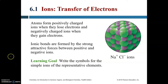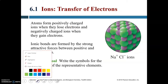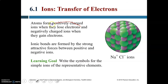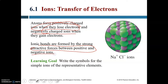We will be talking about chemical bonds, starting with the concept of ions. Atoms are electrically neutral, but when they lose electrons they form positively charged ions, and when they gain electrons they form negatively charged ions. Ions can form ionic bonds, and these ionic bonds are pretty strong because the attractive forces between positive and negative ions are also pretty strong.